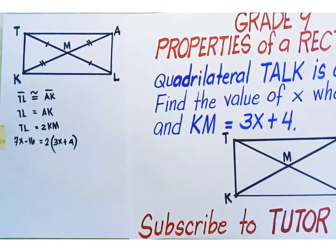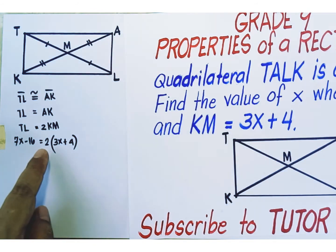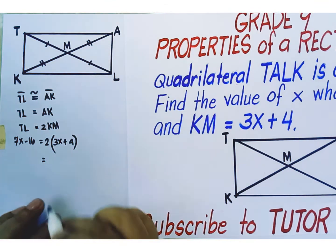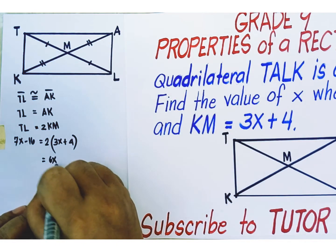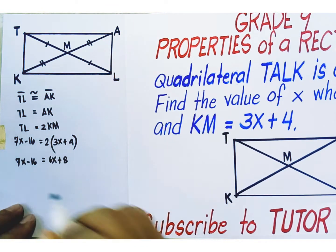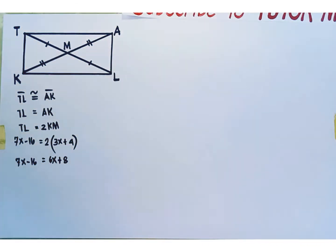Step 1. If the linear equation involves grouping symbols, so we have here parentheses. Our goal is to eliminate first the parentheses by applying distributive property of multiplication over addition. Distribute 2 into each of the terms inside the parentheses. So, 2 times 3x, 2 times 4. 2 times 3x is equal to 6x. 2 times 4 is equal to 8.